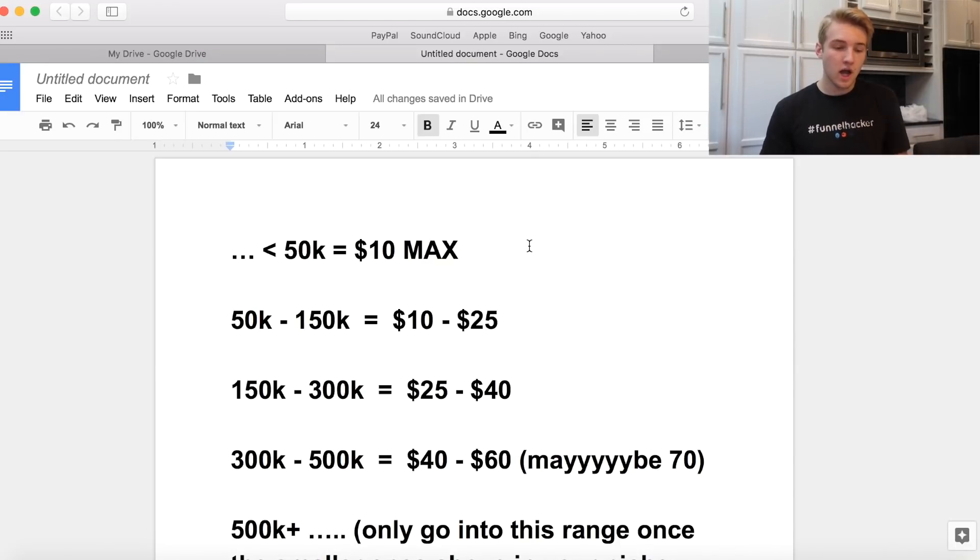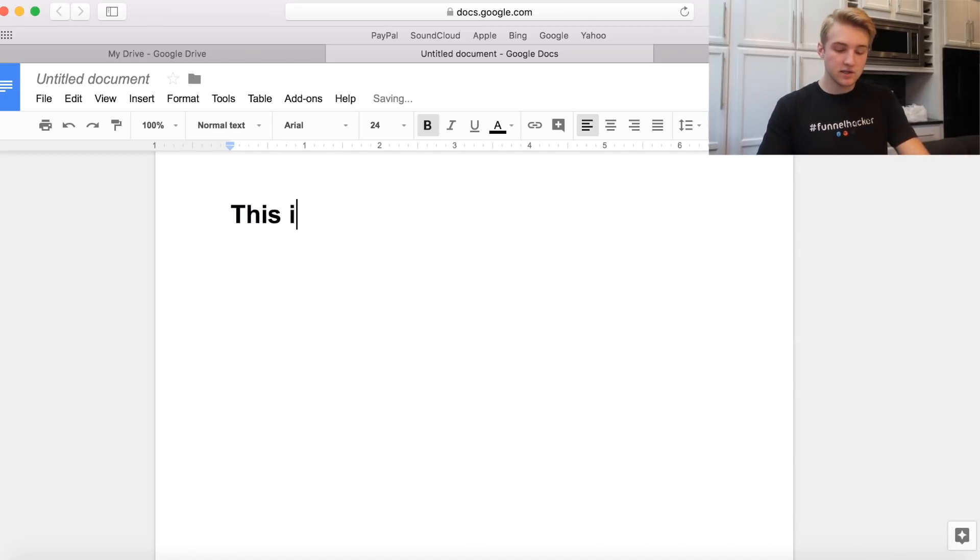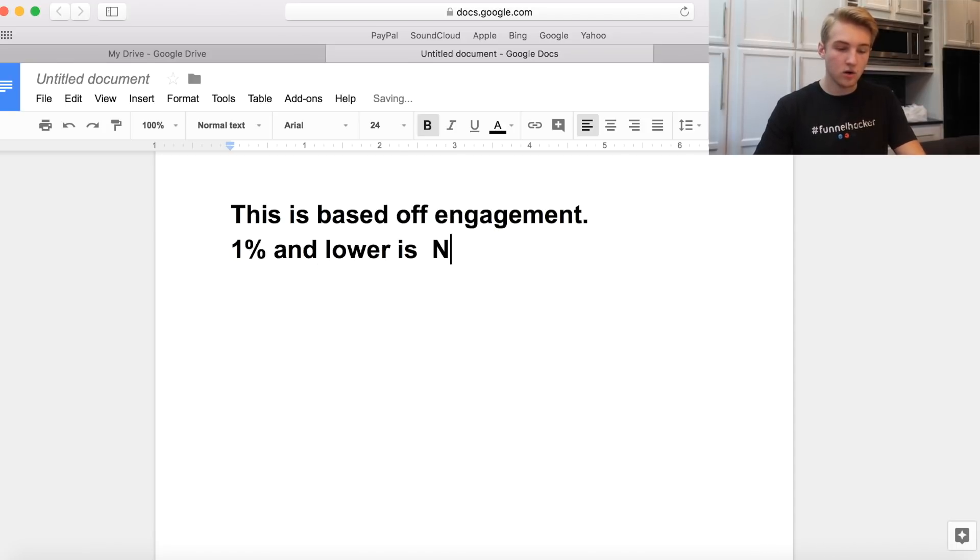Now that we're inside of here, I've outlined all the basic prices based on the actual amount of followers they have. I do want to outline something real fast. This is based off engagement. If a page doesn't have good engagement, I'm not going to run it. 1% and lower is a no-go.